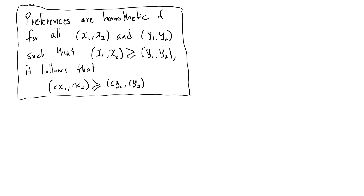Here is the definition again of homothetic preferences. Preferences are homothetic if for all x bundles and all y bundles such that the x bundle is weakly preferred to the y bundle, it must be the case that if you multiply the quantity of all goods of the x bundle you will get a bundle which is weakly preferred to a bundle where you multiply all the quantities of the y bundle with the same constant c, for all c greater than zero.